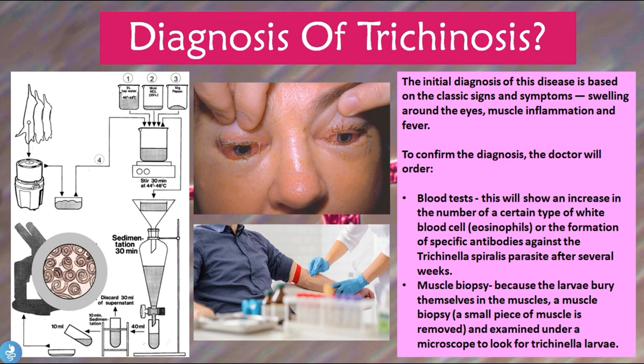How can one diagnose trichinosis? The initial diagnosis is based on the classic signs and symptoms: swelling around the eyes, muscle inflammation, and fever. To confirm the diagnosis, the doctor will order blood tests, which will show an increase in eosinophils or the formation of specific antibodies against Trichinella spiralis after several weeks. A muscle biopsy may also be performed — a small piece of muscle is removed and examined under the microscope to look for Trichinella larvae.